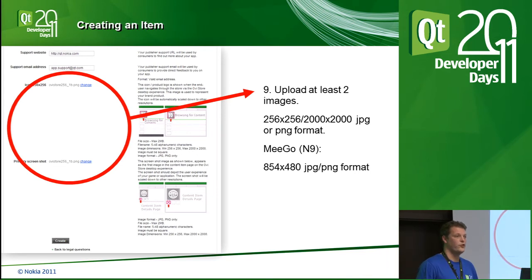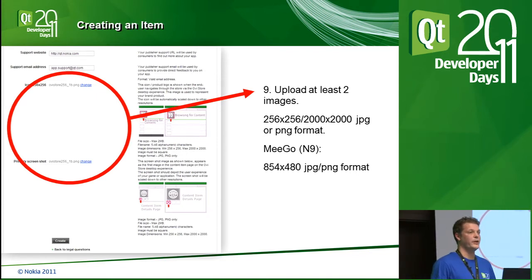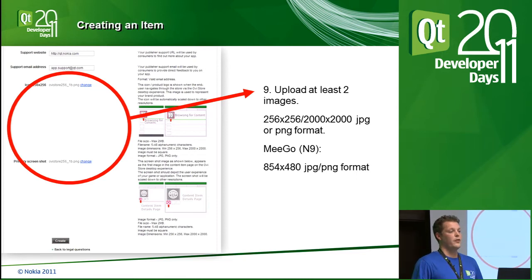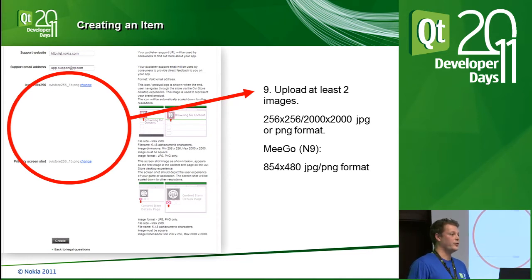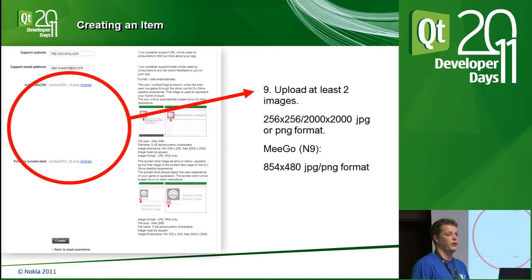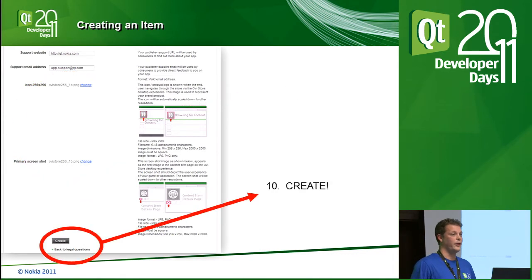You also need to upload at least one screenshot of the application. This screenshot needs to be a direct representation of your application — it can't be slightly different at all. The moderation crew will double-check to make sure the screenshot and the application match. We have had instances where people have a screenshot that clearly looks a lot better than the application. Also, if you are uploading a Qt build for N9, the screenshot is a different orientation — for Symbian 3 devices the screenshot needs to be square, and for MeeGo it's the MeeGo screen size. Once you've uploaded all that, you have effectively created the box and can move to uploading the file.